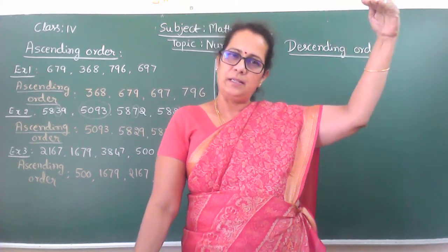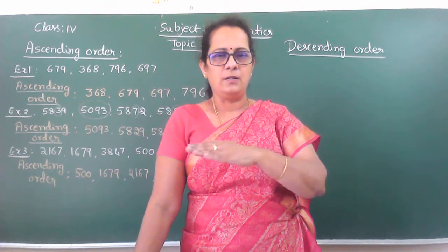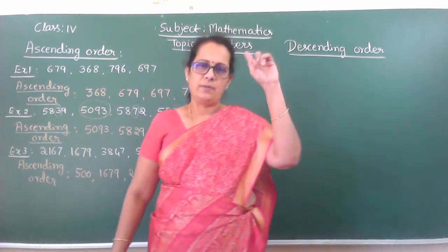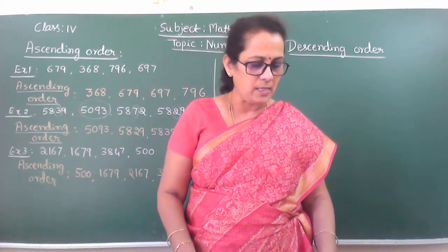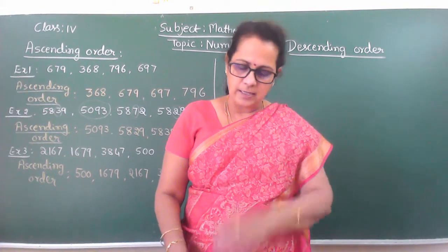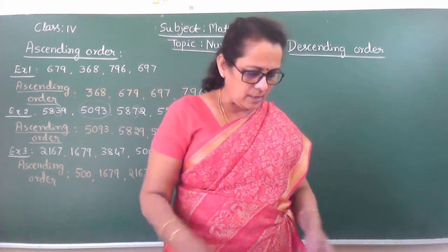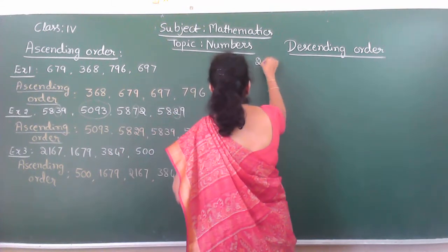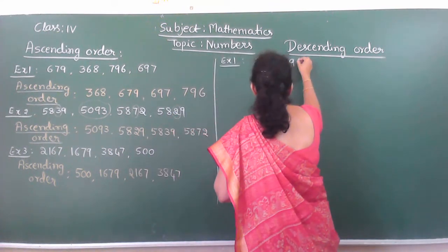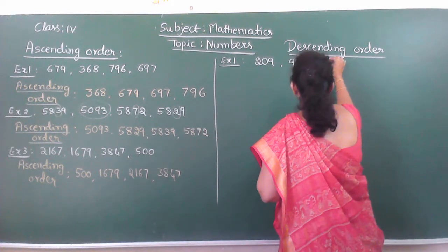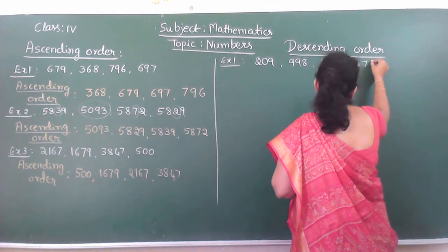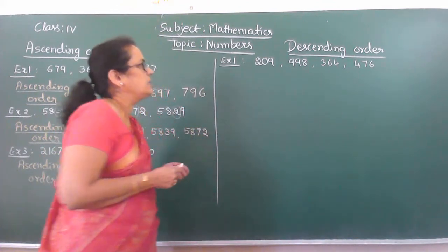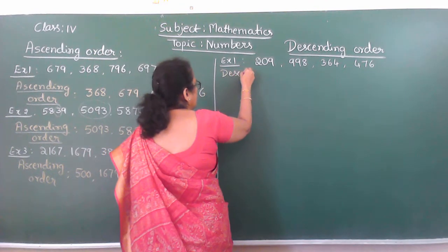So I will write some example sums and we will discuss. First example for descending order: 209, 998, 364, 476. So I have taken 3-digit numbers. We will write this in descending order.